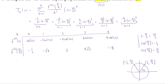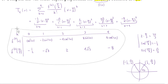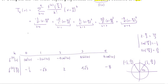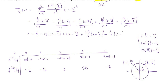Simplifying: negative 1/2, minus root 3 times (x minus pi over 3), plus (x minus pi over 3) squared — since 2 over 2 factorial is 1. Then 4 over 6 simplifies to 2/3, giving plus 2 root 3 over 3 times (x minus pi over 3) cubed. Finally, 8 over 24 is 1/3, giving minus 1/3 times (x minus pi over 3) to the fourth. There is our fourth order Taylor polynomial for cosine of 2x centered at pi over 3.